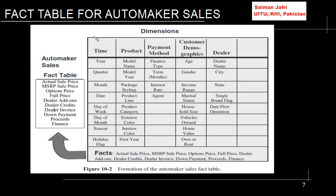Now we can look at the fact table for the automaker sales. These were the facts we discussed before: actual sale price, maximum rate price, sale price, options price, full price, dealer add-ons, etc. The fact table would contain these attributes as shown. Now similar to the fact table that we have created, we can go on to create the dimension tables for each of the dimensions. I would invite students to use the same template and style and try to create the dimension tables for the different dimensions.